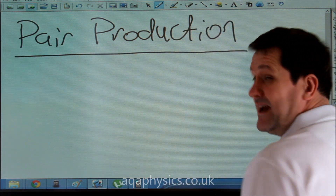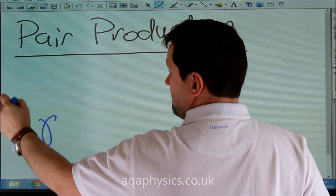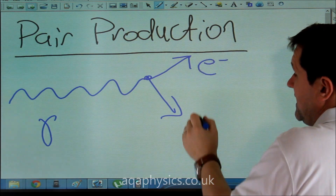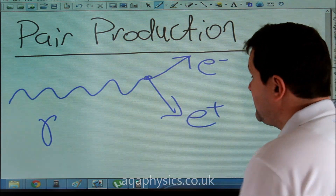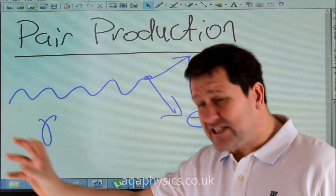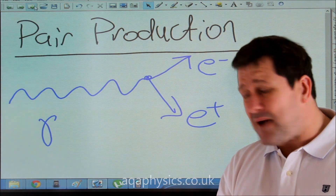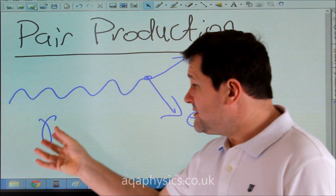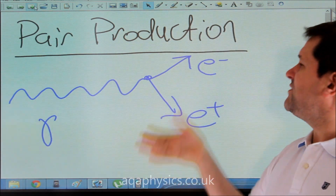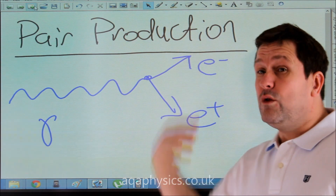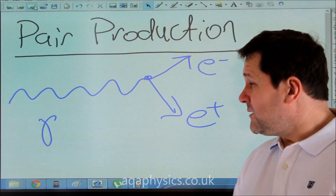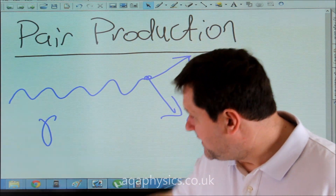Pair production occurs when a gamma ray suddenly turns into matter and antimatter. For example, an electron-positron pair could be produced — it could also be a proton-antiproton pair and so forth. A very high energy gamma ray produces an electron-positron pair. In order for charge and electron numbers to be conserved, we always have to have a pair with pair production, but the mass of these two things are the same.